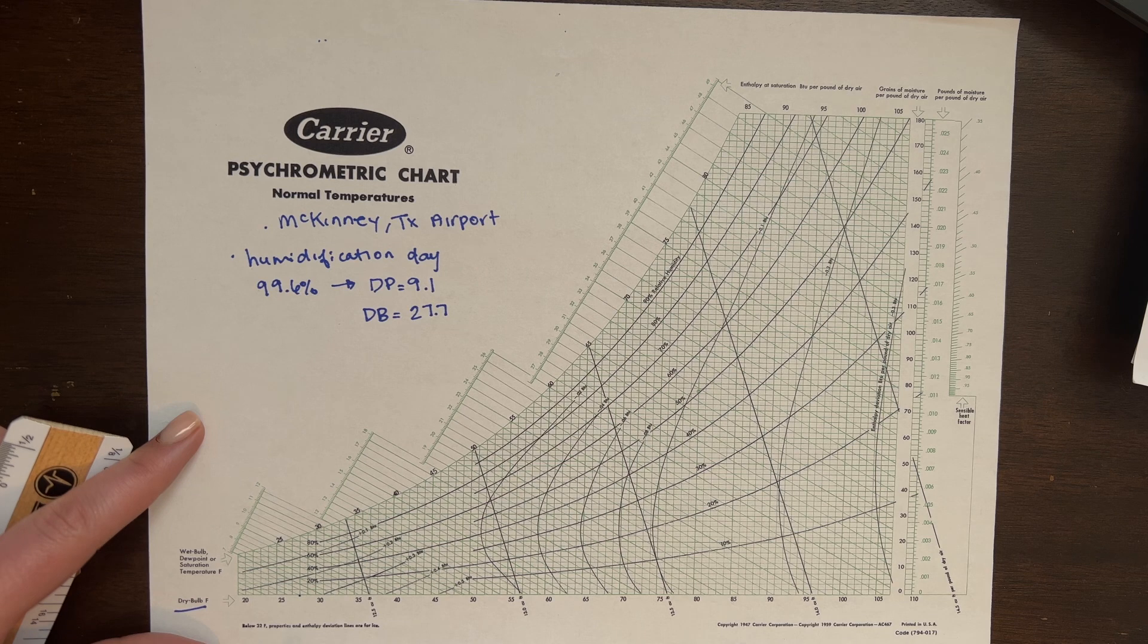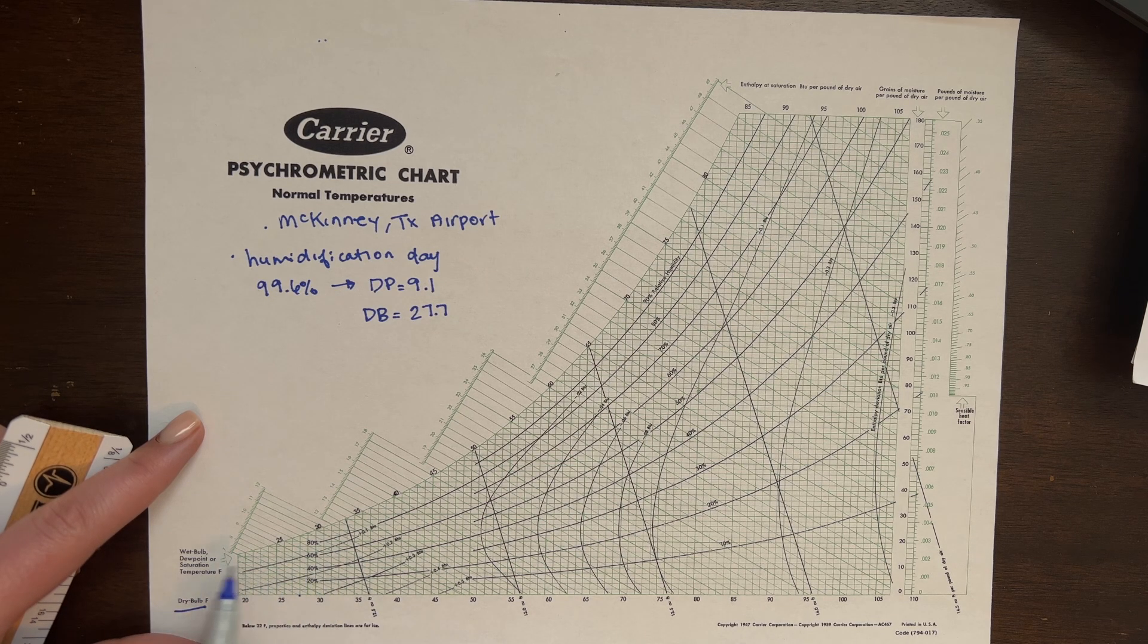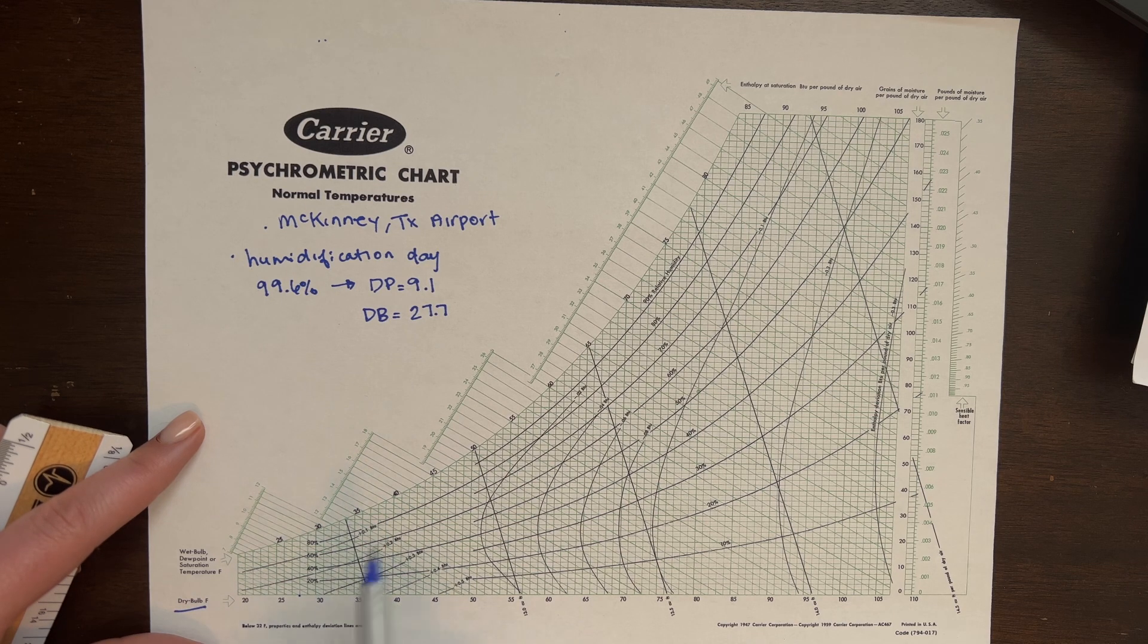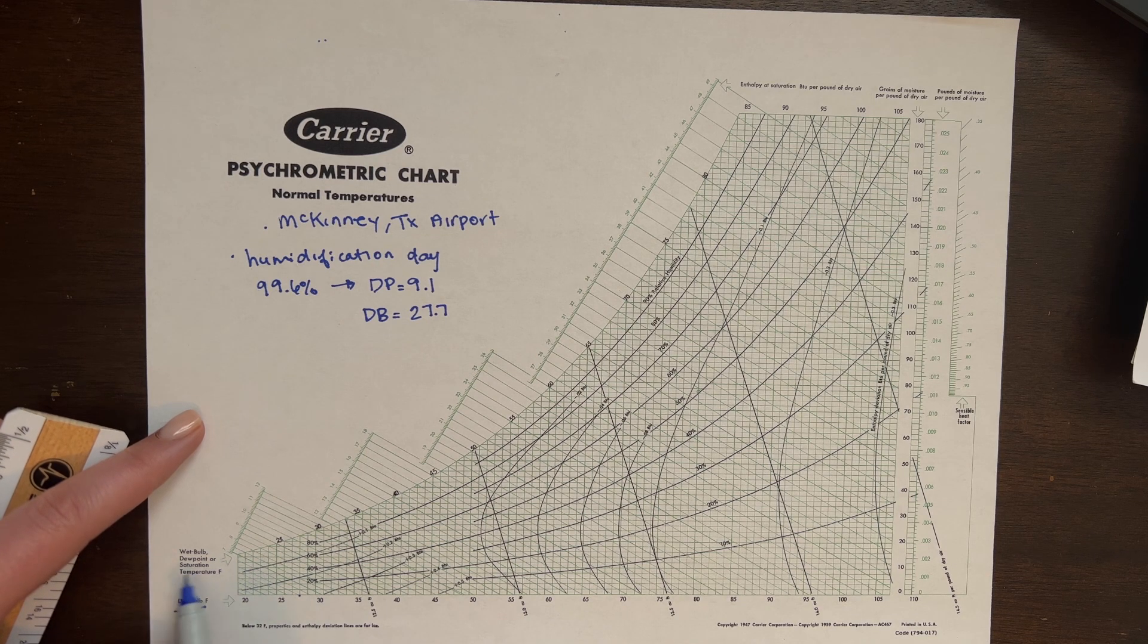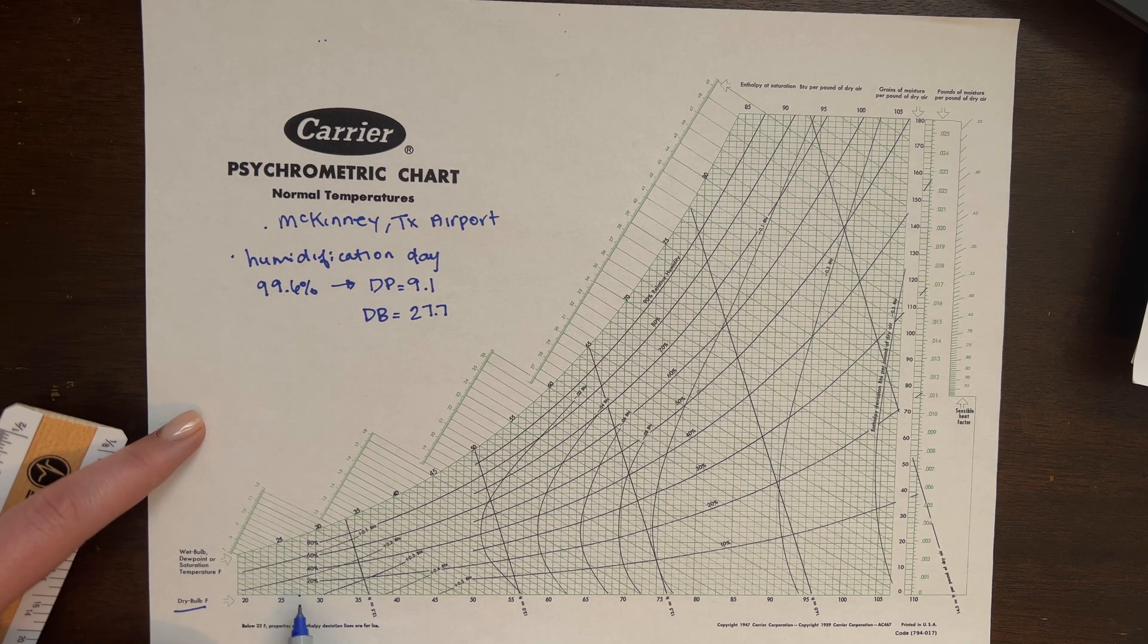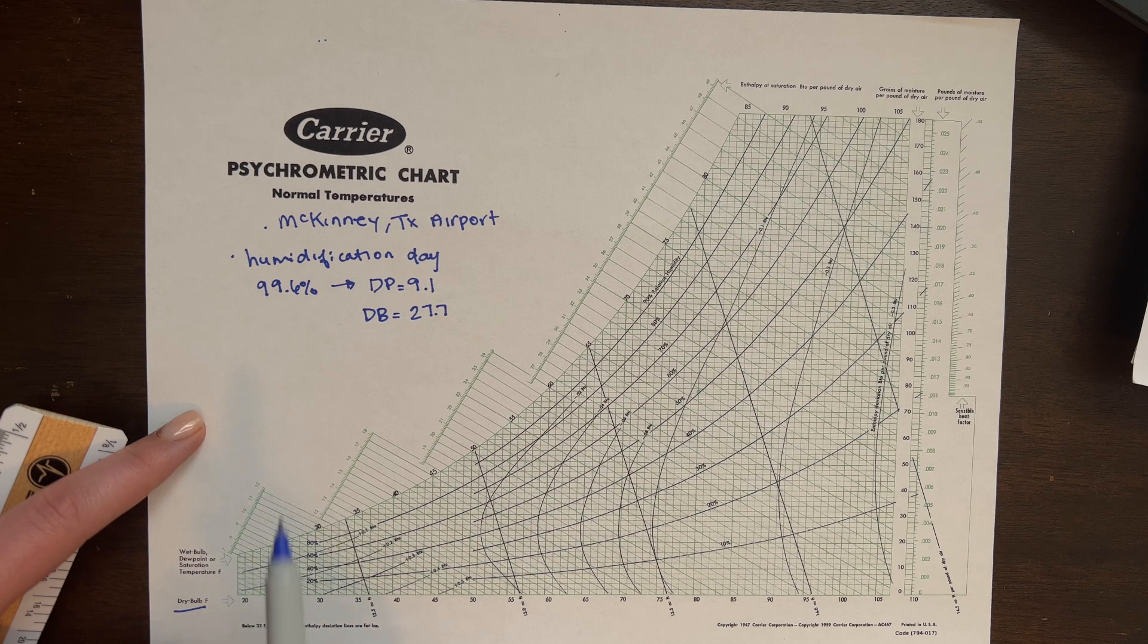9.1 is going to be our dew point. That's going to be way off of our sheet. So in this instance, I like to try to follow this curve. Sometimes you can find curves where it continues. But here for a 9 dew point, this curve only goes to 20.